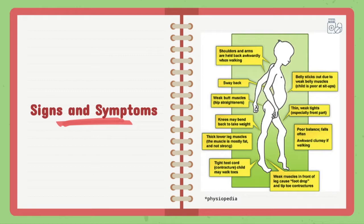This diagram depicts a variety of symptoms a person may experience with BMD. These symptoms include muscle aches, also known as myalgias, muscle weakness in the hips, pelvis, thighs, and shoulders, difficulty walking or running, and abnormally large calves.